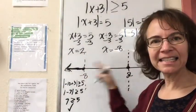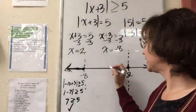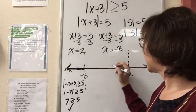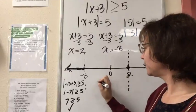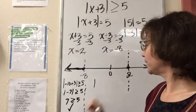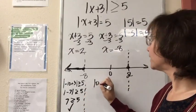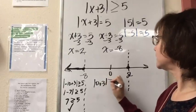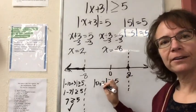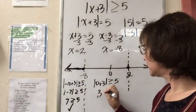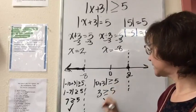I'm guessing the interval between negative 8 and 2 will likely be false, but let's check x equals 0. The absolute value of 0 plus 3 is greater than or equal to 5. The absolute value of 3 is just 3, and 3 is not greater than or equal to 5. This is false.